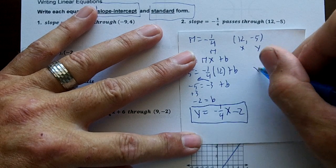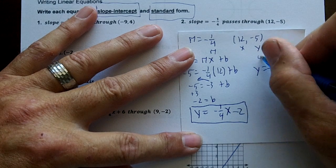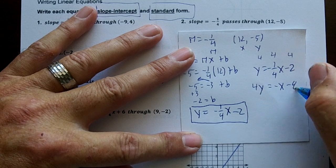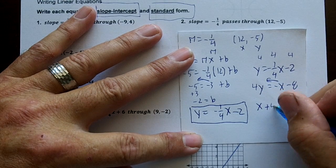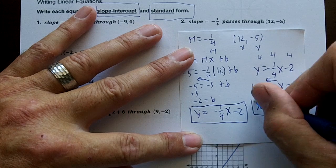So I'm going to put y equals negative 1 over 4x minus 2 right here, multiply everything by 4, 4y equals negative x minus 8, move over the x, and I get x plus 4y equals negative 8. That's my standard.